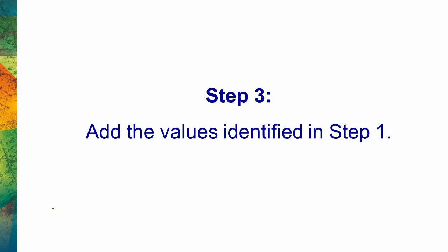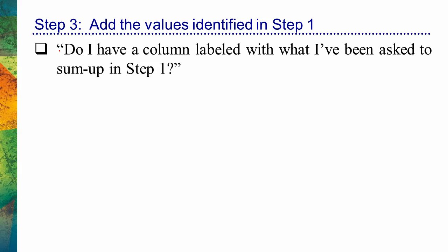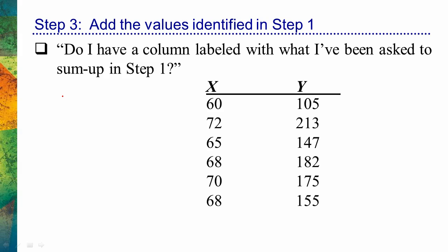Step three is the fun part — now we're going to simply sum up what we need to sum up. We determine if we have the values we're asked to sum up from step one, and if we do, we add them up. The critical question is: 'Do I have a column labeled with what I've been asked to sum up in step one?' For sigma x, I'm being asked to sum up x values. I already have a column for x — I don't need to add anything. In step three I ask: do I have a column labeled x? Yes. It's time to sum it up, so we can add up all of these values.